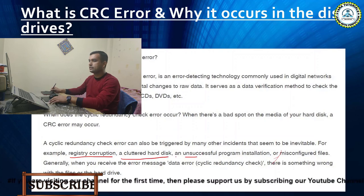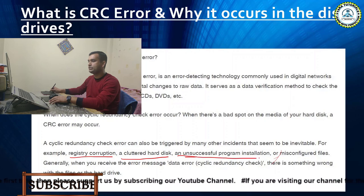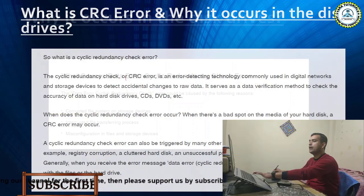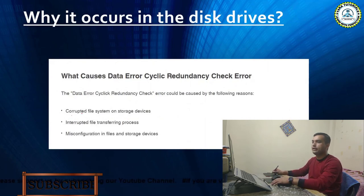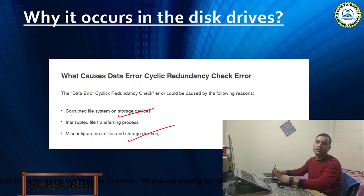This error is triggered by several reasons: registry corruption, a cluttered hard disk, an unsuccessful program installation, and misconfigured files. Apart from that, there are other reasons like a corrupted file system on the storage device, interrupted file transferring process, and misconfiguration in files and storage devices. Some of these things are unavoidable, but you can avoid some — for example, if a data transfer process is going on, you should not directly remove the disk. You should first eject the drive safely.